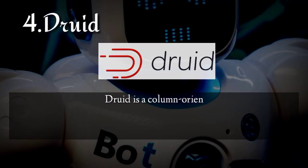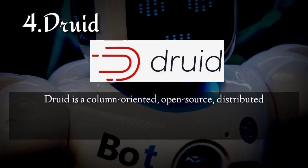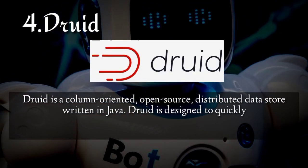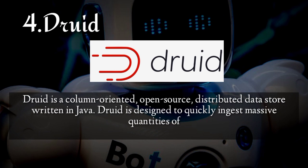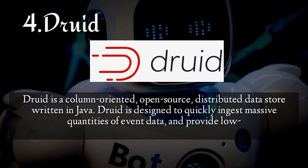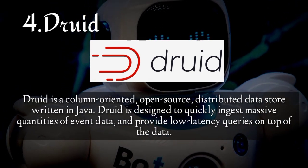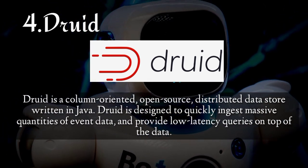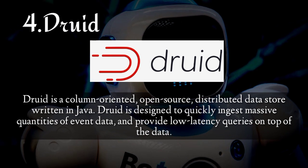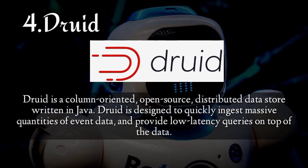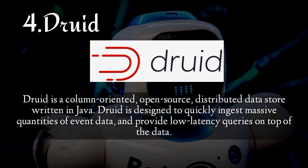Druid is a column-oriented, open-source, distributed data store written in Java. Druid is designed to quickly ingest massive quantities of event data and provide low-latency queries on top of the data.